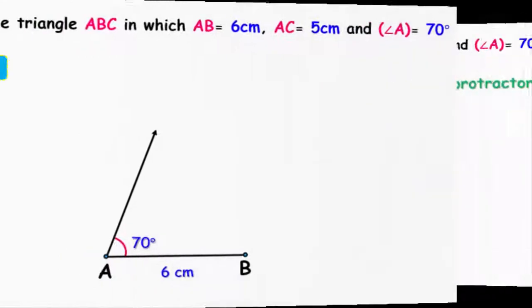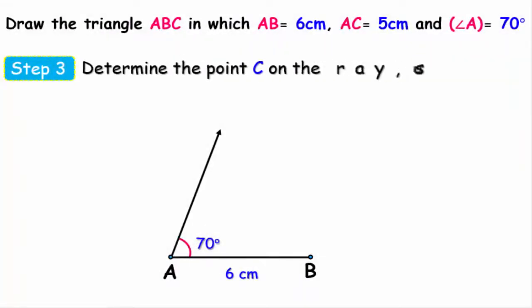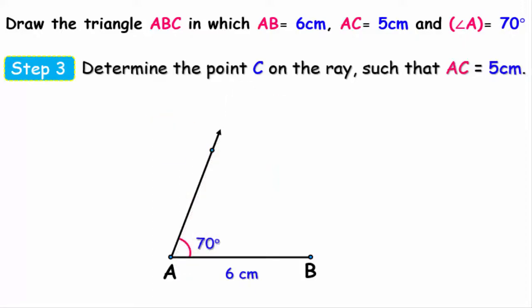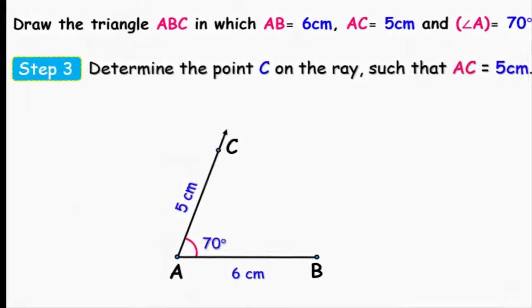Our third step, by using a ruler, we'll determine the point C on the ray so the length of AC equals 5 centimeters. And don't forget to write the measurement of length on the triangle.